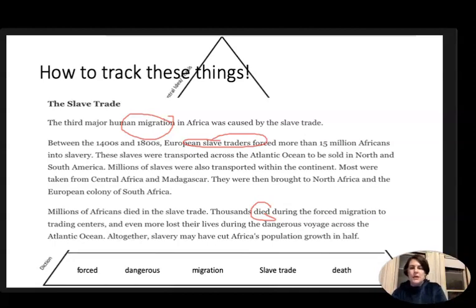In here the topic is clearly the migration due to slave trade but with those extra diction connotation words of forced, dangerous, and pointing out all the death stuff, the author is clearly showing us a very negative opinion that they really have strong negative feelings about what was going on. So these feelings are starting to lead us to a deeper main idea of not just what happened but the author starting to express an opinion in here as well.